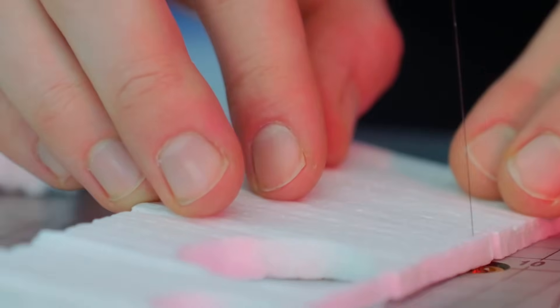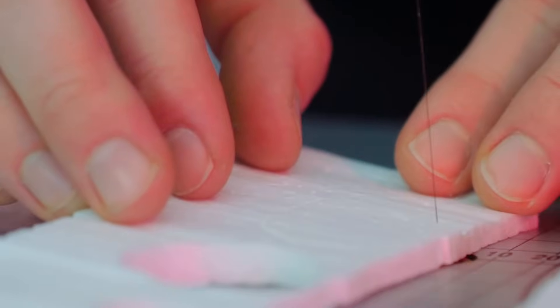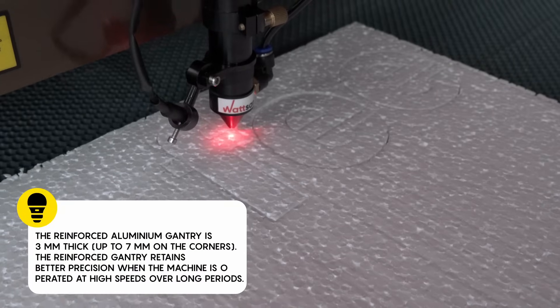Foam can still be cut with a string, but then a lot depends on the person. The speed and accuracy of the work, for example. The machine eliminates this and helps to achieve the highest precision and speed.